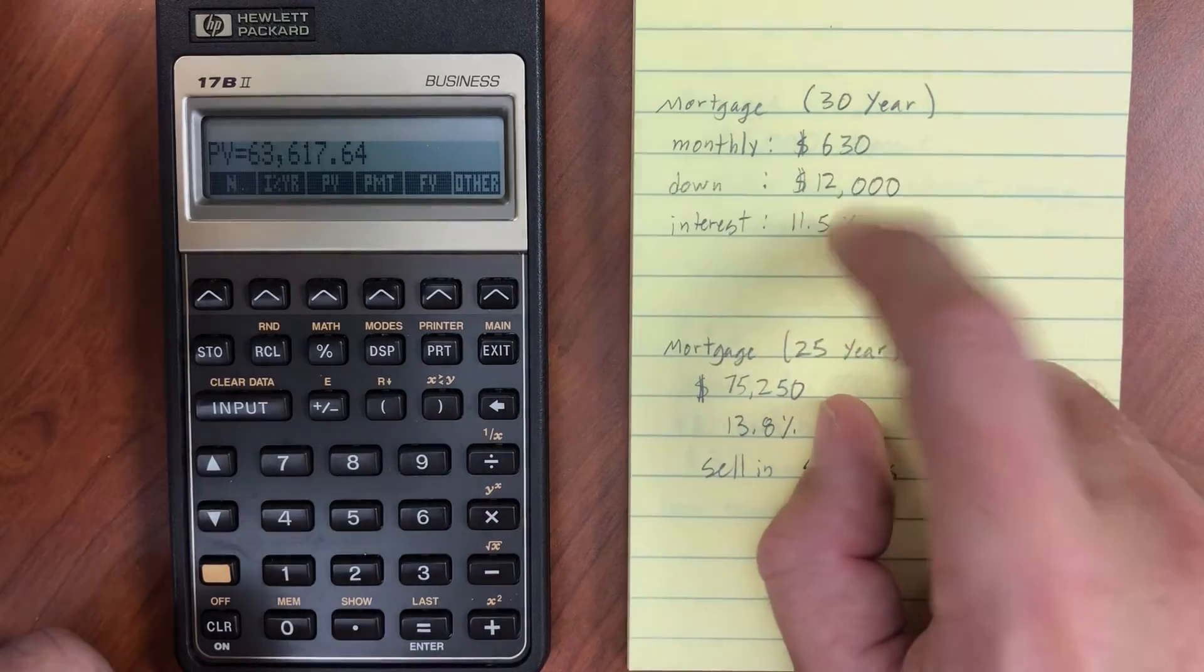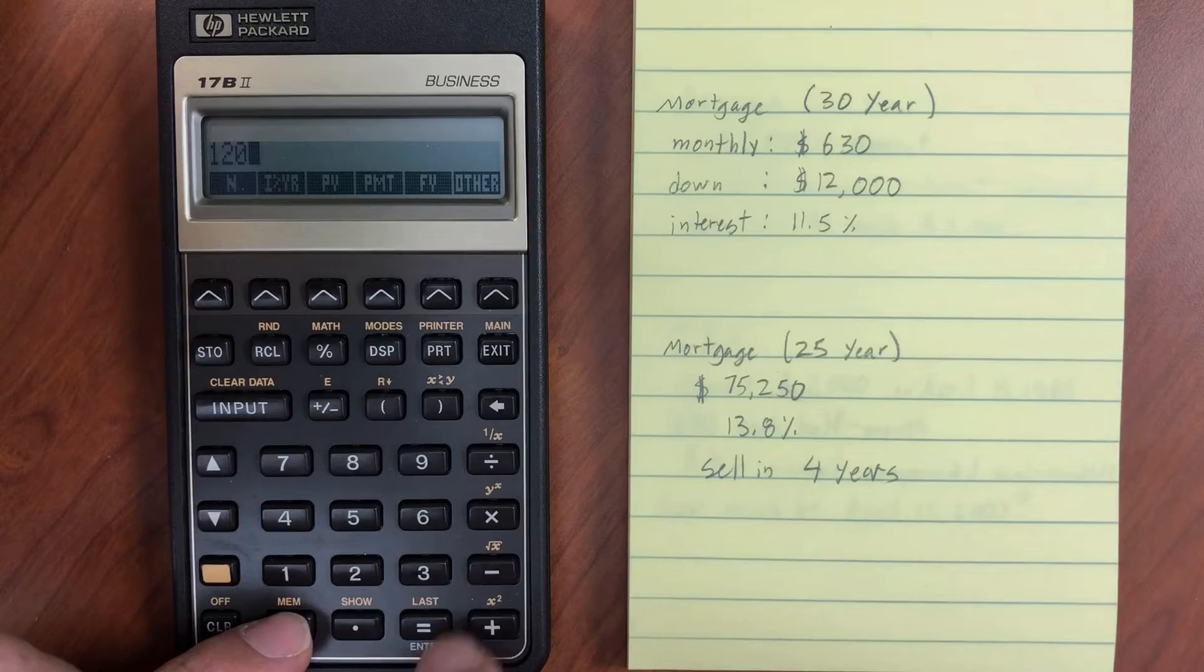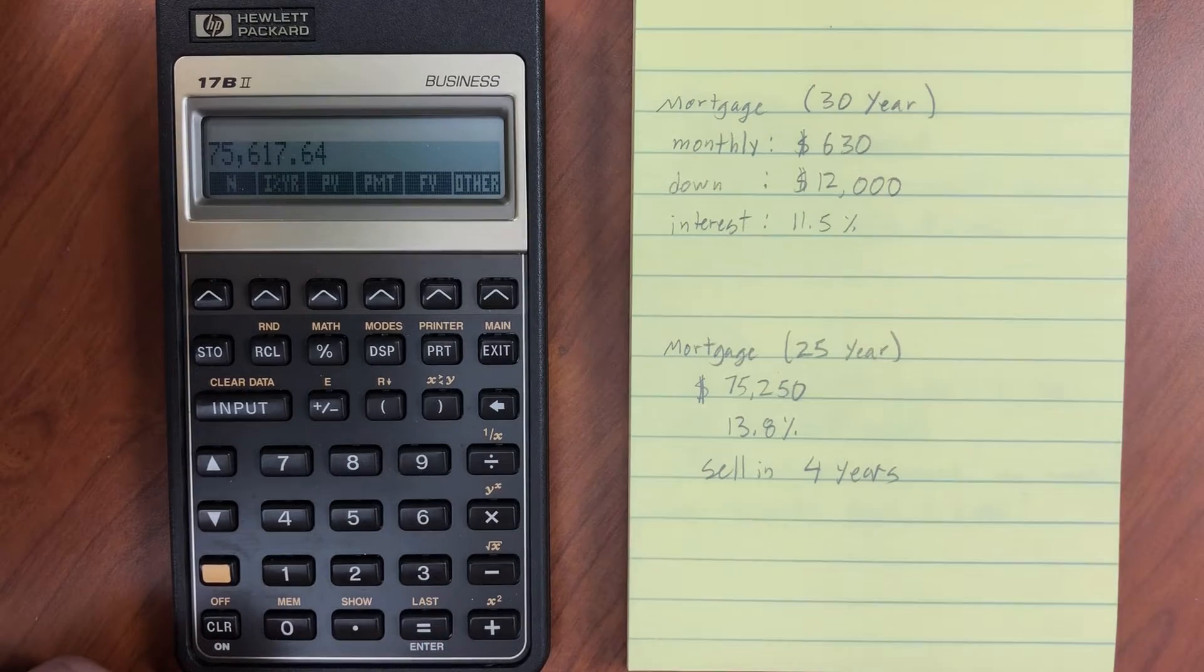And then tack on our down payment, what we have in savings. And that's the total value of the house that we would be able to afford.